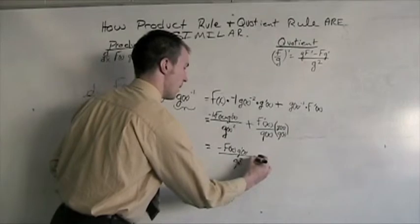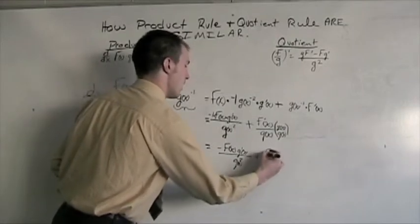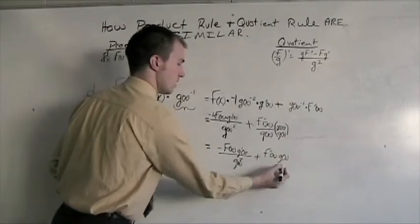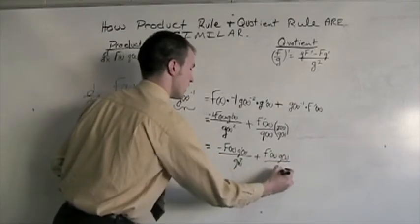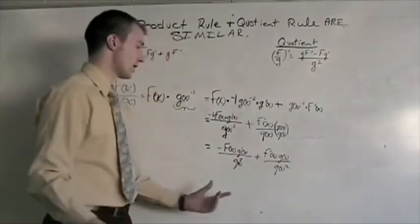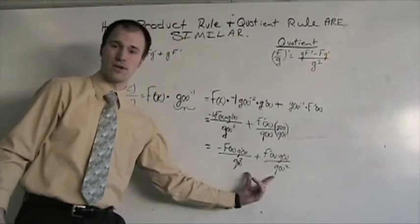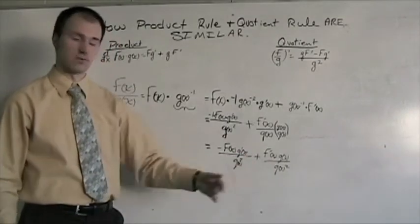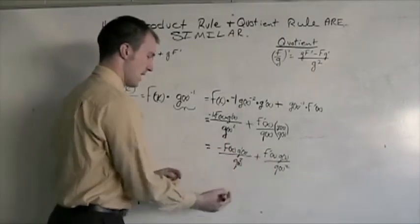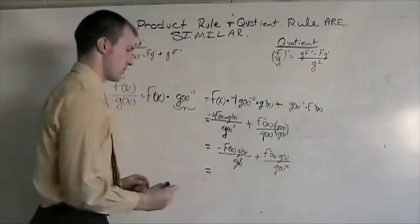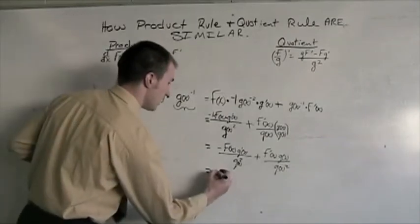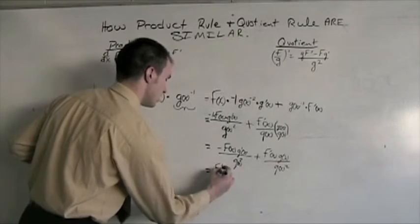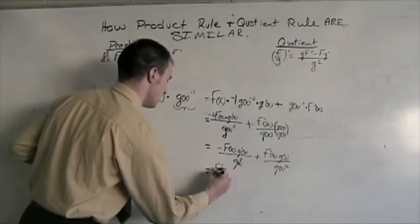Or g(x) squared, plus f prime of x times g(x), all over g(x) squared. Now that I have these two equal to each other, what I'm going to do is I'm going to set my positive in the front and then subtract this negative piece, which is going to be my last step here.